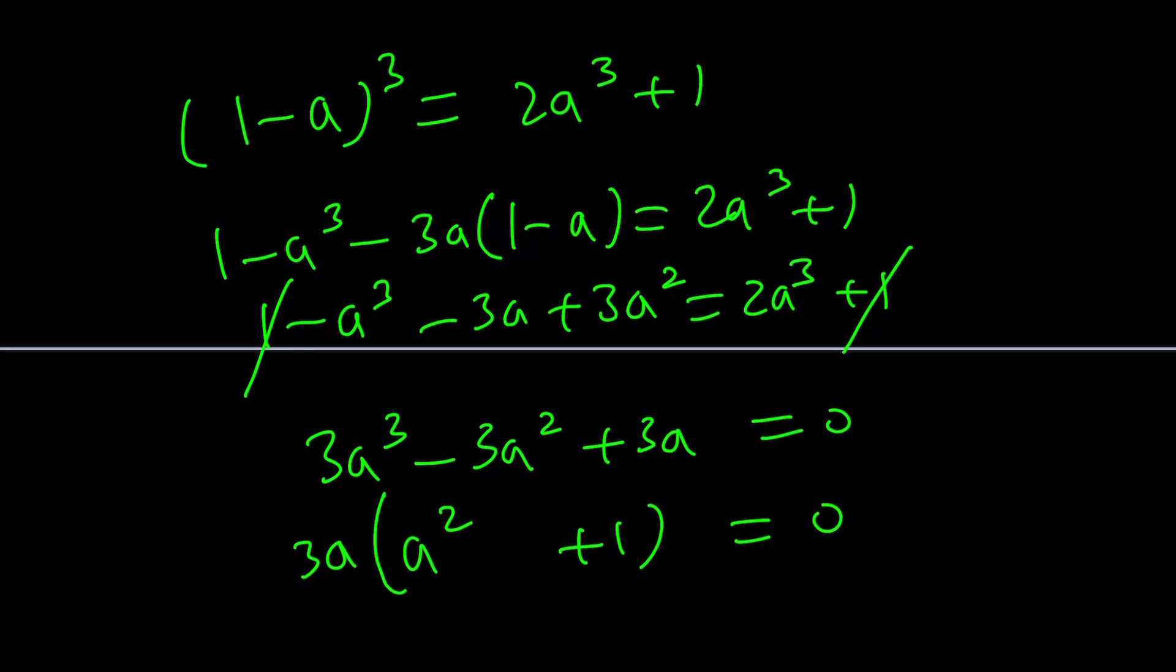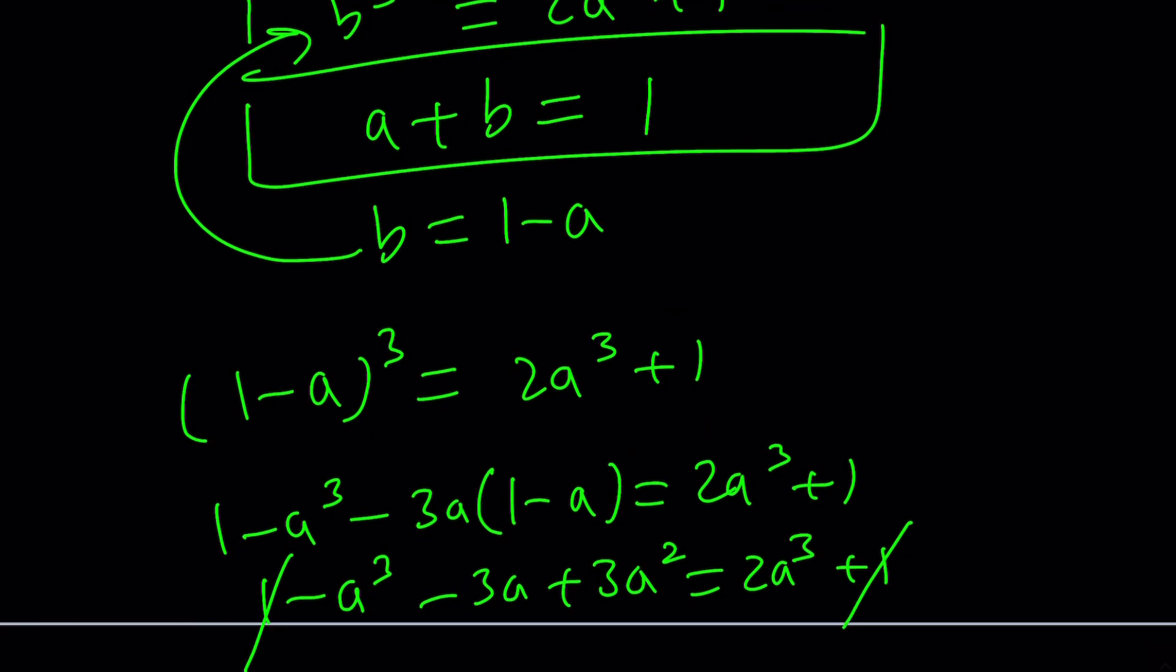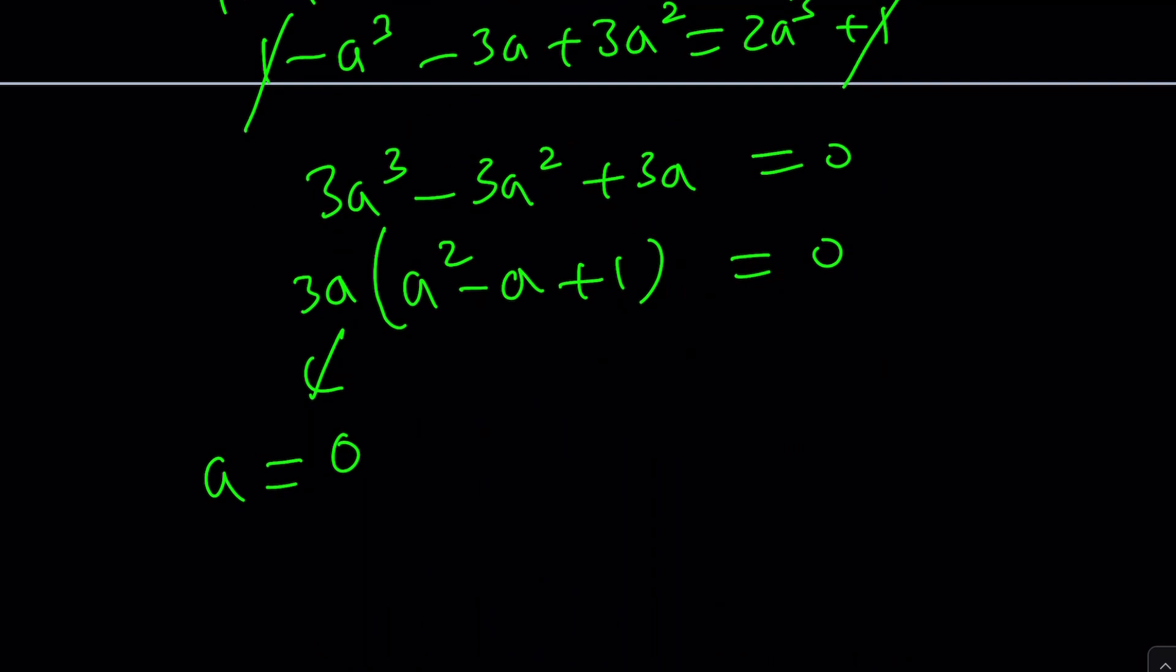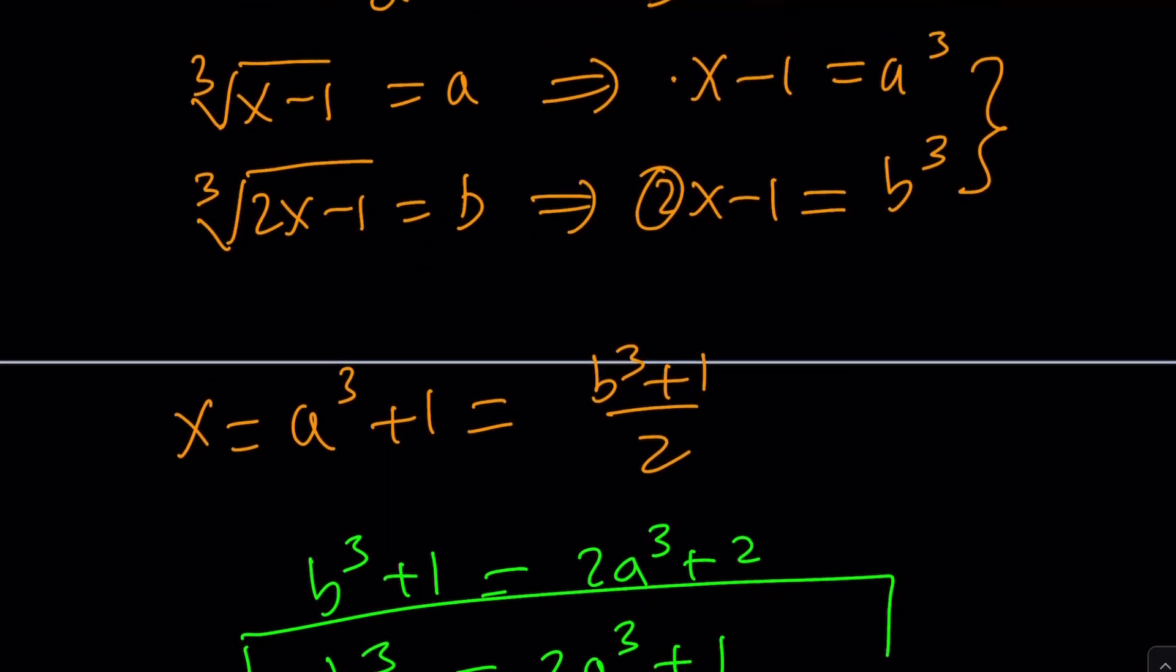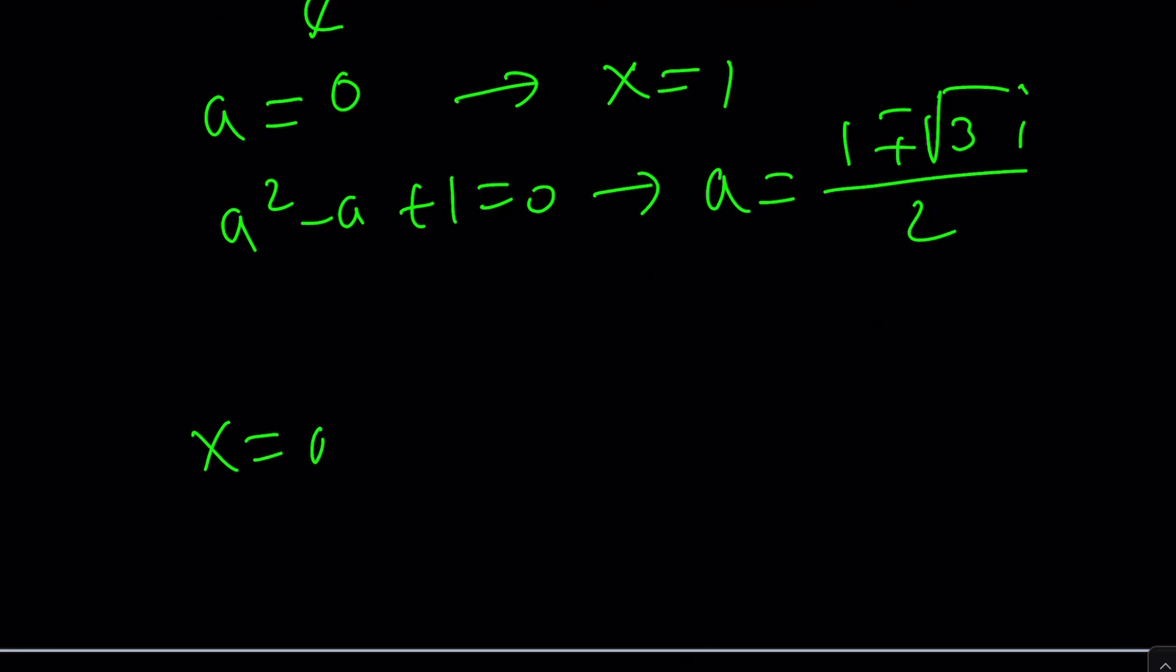So what happens from here is basically, obviously, we're going to get complex solutions from this A, but the other one is going to give us A equals 0. A equals 0 means B equals 1, or A equals 0 means X equals 1. So X equals 1 comes from here, and the other solution we didn't do is going to come from the solutions of this. And if you solve this, you're going to get negative B plus minus the square root of B squared minus 4AC, which is square root of 3i, divided by 2. And now, what's the relationship between X and A? X is basically A cubed plus 1, so go ahead and cube this, add 1, and you'll get the complex solutions.